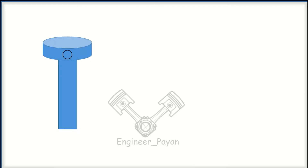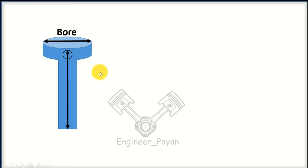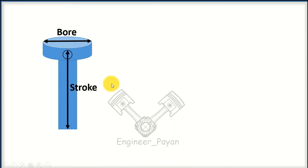If you want to know the working of the system, we can find the bore and stroke. This is a normal piston — the bore is the circular diameter of the piston, and the stroke is connected to the pin. If you look at this point, we will define the length of the stroke.